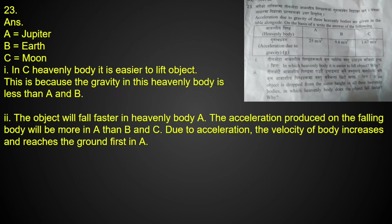In which heavenly body is it easier to lift objects? In heavenly body C, because the acceleration due to gravity is less — there is less gravitational pull and comparatively less weight. In which heavenly body will an object fall faster? In heavenly body A, because the acceleration produced in the falling body is more — 25 — which is greater than that of B and C.